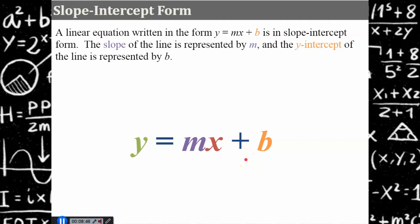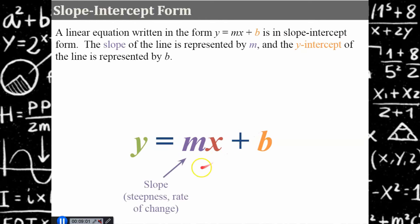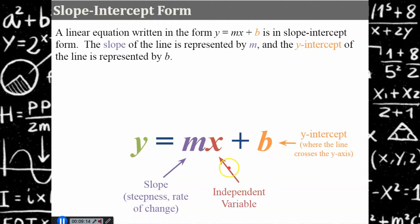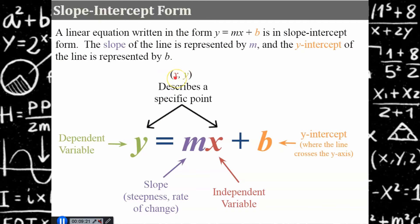Now we have slope-intercept form. The linear equation written as y equals mx plus b is in slope-intercept form, where the slope of the line is represented by m and the y-intercept is represented by b. Slope describes the steepness of the line or the rate of change. The y-intercept tells us where the line will cross the y-axis. X is the independent variable and y is the dependent variable. Any x value with its coordinating y value is a coordinate or ordered pair describing a specific point on the line — any point on a line is a solution to a linear equation.